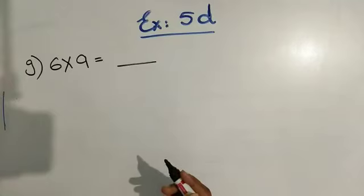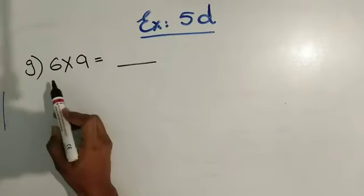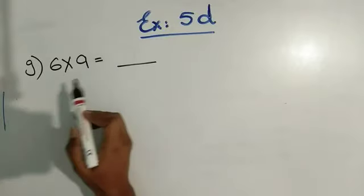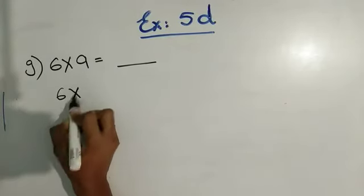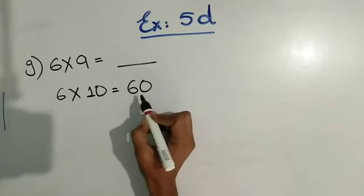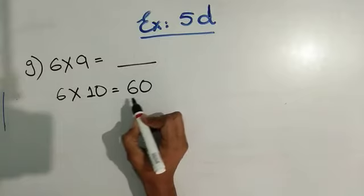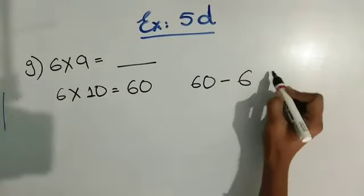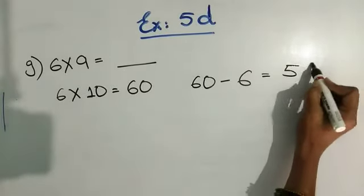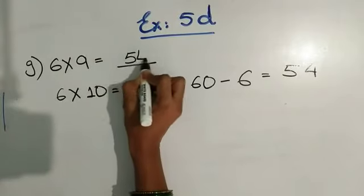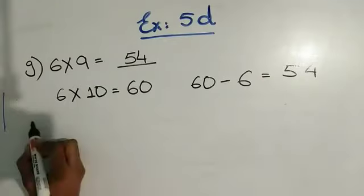Let's do exercise 5D by using the second method. Our question is 6 multiplied by 9 is equal to what? So first we will multiply 6 into 10, we will get 60. After this we will subtract the multiplier, means 60 minus 6, so we will get 54. So 6 nines equal 54.